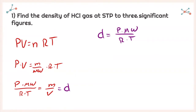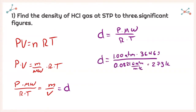Plugging everything in at standard temperature and pressure: 1.00 atmospheres, molecular weight of HCl is 36.46, R is 0.0821 because we're in atmospheres, and at STP temperature is 273 Kelvin. Plugging all that into my calculator, I get a density of 1.63 grams per liter.